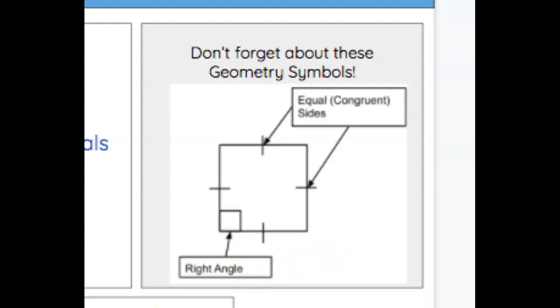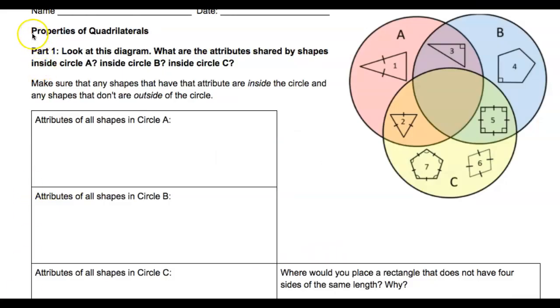Okay, let's look at our task. This task is called Properties of Quadrilaterals. Part one: Look at the diagram. What are the attributes shared by shapes inside circle A? What about circle B and circle C?